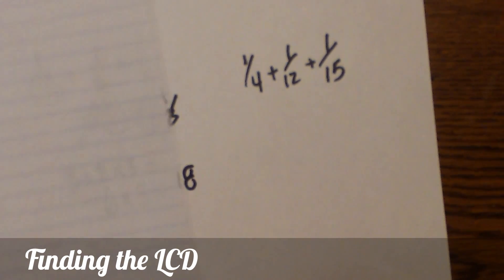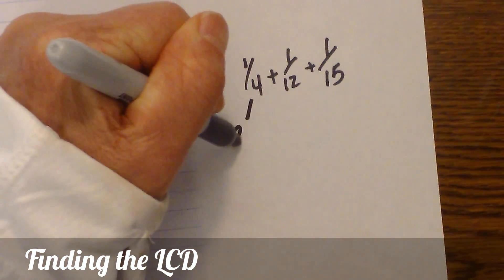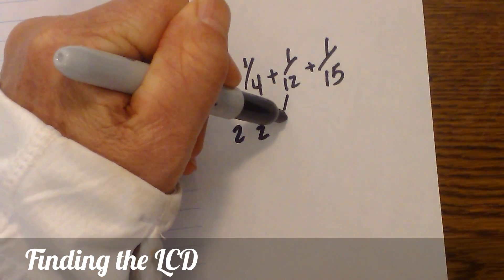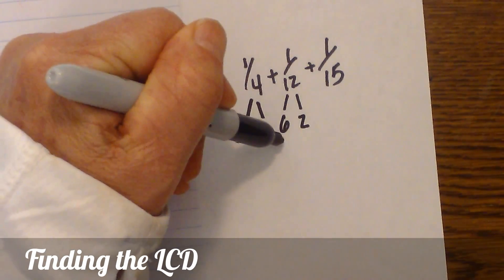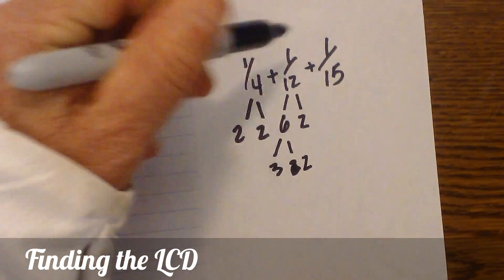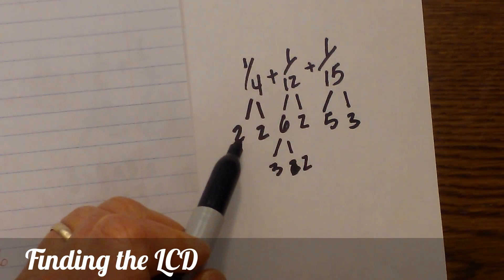What I need to do is find the prime factorization. Four is two times two, and twelve is six times two, and then three times two, and this is five times three. We're down to primes.